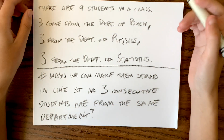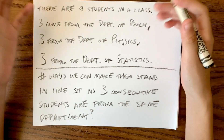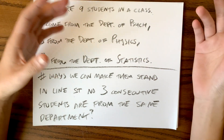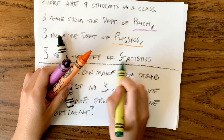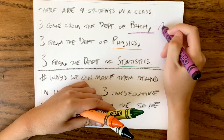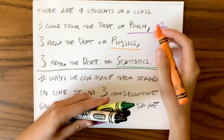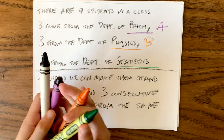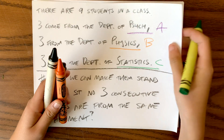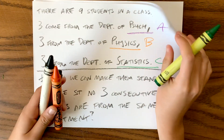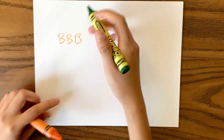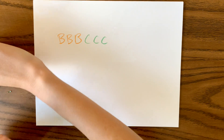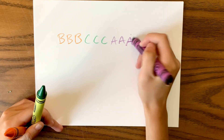An application of this could be if you want students from different departments to co-mingle and talk to each other — you don't want them all from the same department. I'll call the psychology students Department A, the physics ones Department B, and the statistics ones Department C. An example of what we do not want would be all of the physics students, all of the stats students, and all of the psych students standing next to each other in the line.